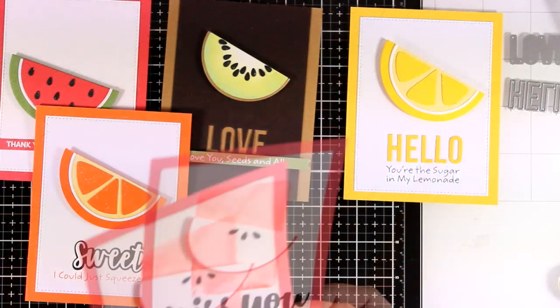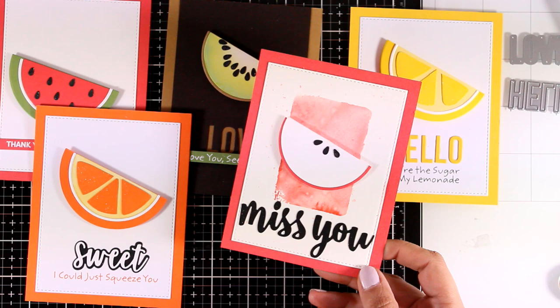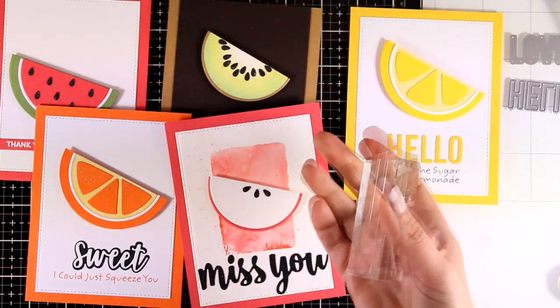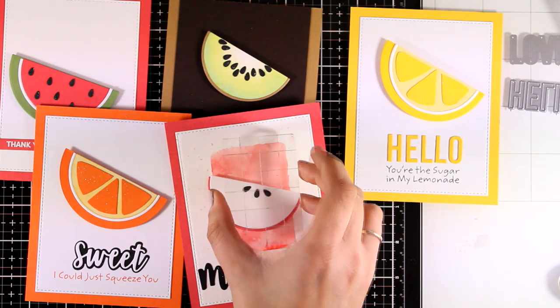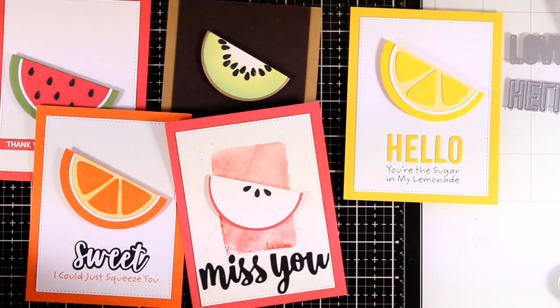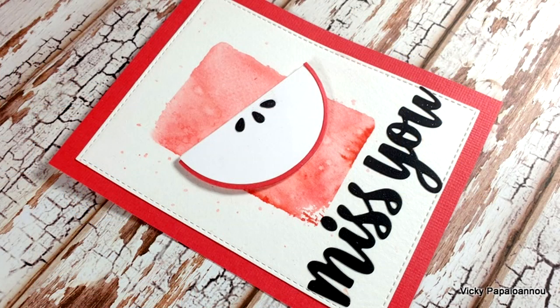Here is my apple card. For the background behind the apple, I just used a stamping block with a technique where you apply some Distress Oxide ink on the stamping block, apply water, and just place it on top of your paper. This background helps the apple to pop up even more, otherwise it could be white over white.